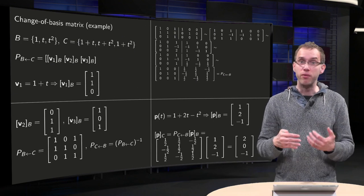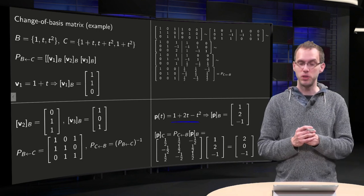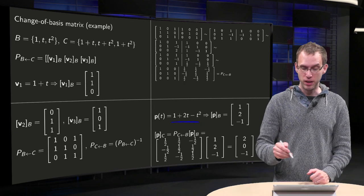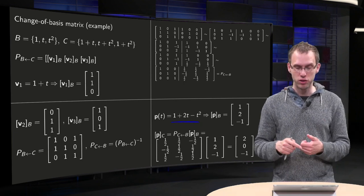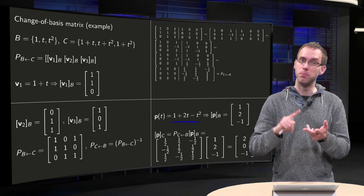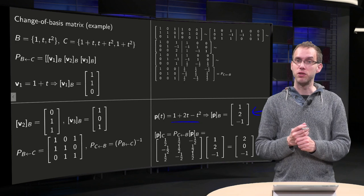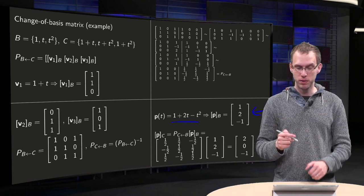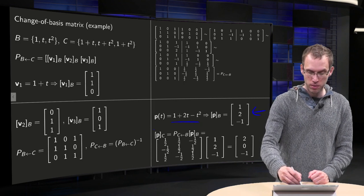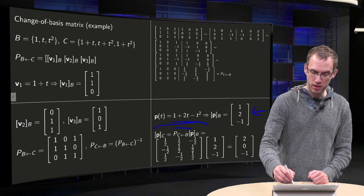Now, how can we use this? Well, if we have for example our p(t) equals 1 plus 2t minus t squared, it is easy to compute p in the basis B, because B is the standard basis. So we have just 1 times 1 plus 2 times t minus 1 times t squared. So p in the basis B equals 1, 2, minus 1. And then we can compute using our matrix p in the basis C, because p in the basis C equals P from B to C times p in B.